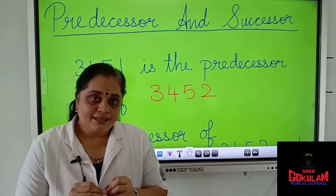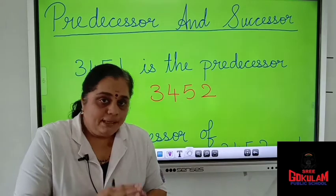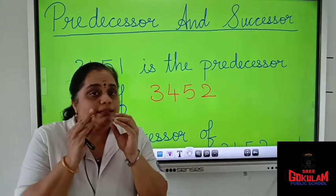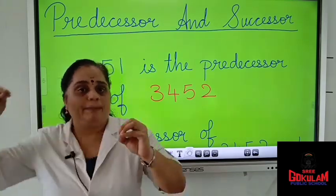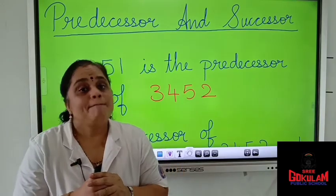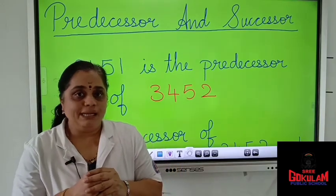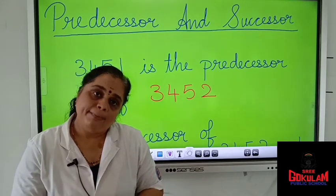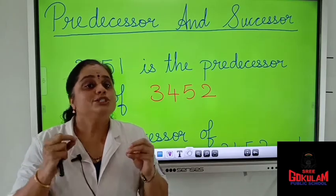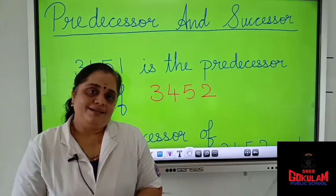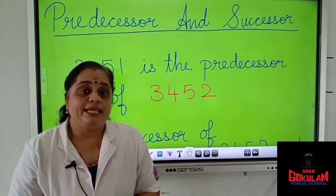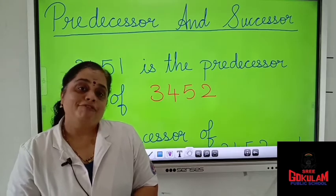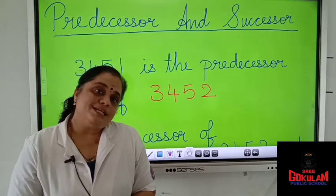Predecessor means: one number will be given to you, and the number which comes before that particular number is called the predecessor. For example, before the number 21, which number will come? 20. So, 20 is the predecessor. Before the number 58, which number will come? 57. So, 57 is the predecessor.